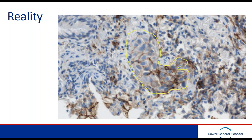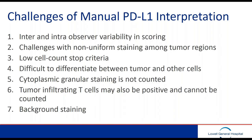We took on the challenge. All five pathologists here completed online training within a couple of weeks and were approved by Dr. Weiss for professional interpretation. We encountered many challenges once we started, including inter- and intra-observer variability in scoring, challenges with background staining, non-uniform staining, and low cell count. Most of the biopsies had more than 100 cells, but 100 cells was all that was necessary.